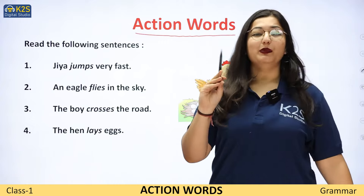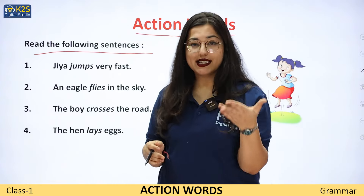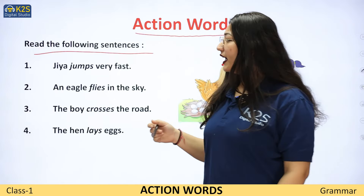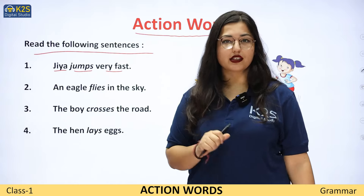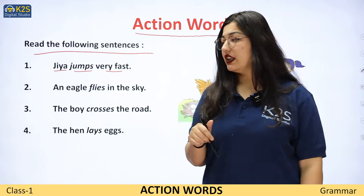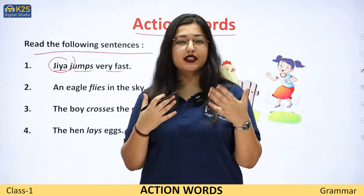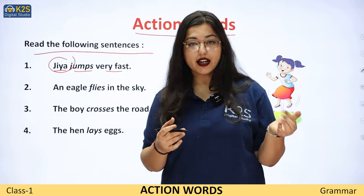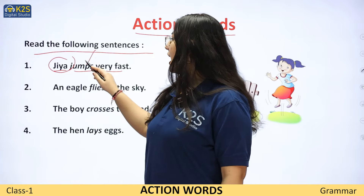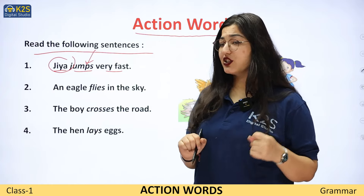Ab aapko yahan par action word ko parhna hai. Read the following sentences — aap ko yeh saare sentences mere saath parhne hai aur batana hai ki kaunsa action word hai. 'Jiya jumps very fast.' Jiya jo hai bahot tez, bahot fastly jump kerti hai. Toh yahan par noun kya hai? Jiya. Aur Jiya kaunsa action kar rahi hai? Jumping ka. Toh jumping kya ho gya? Mera action word.